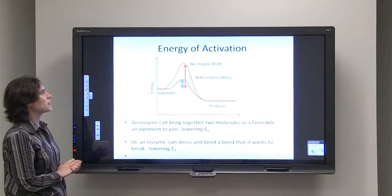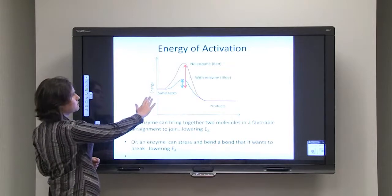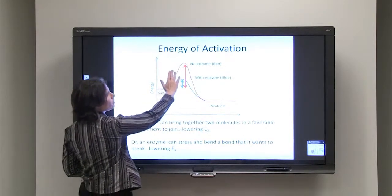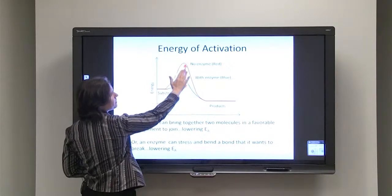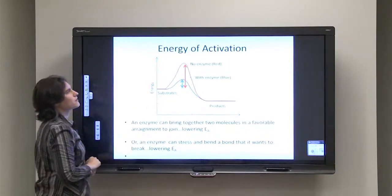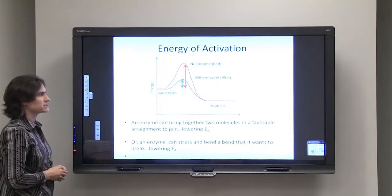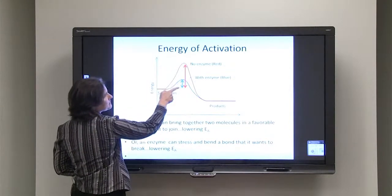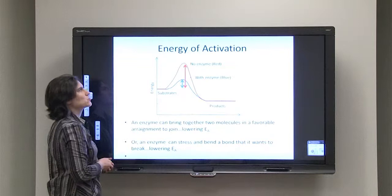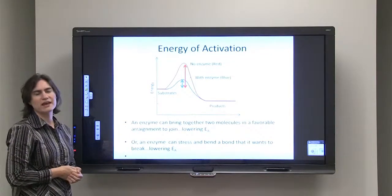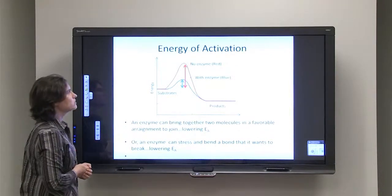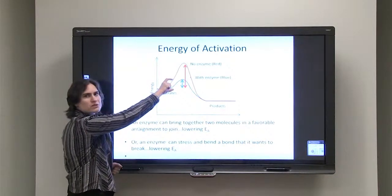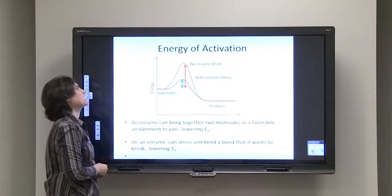Here's an example of what I'm talking about. We've got some substrates that have a certain amount of energy, and then there's an energy barrier that they have to overcome before a reaction can take place. Without an enzyme, we have a very high energy hurdle. But when you use an enzyme, that energy of activation can be reduced, so the reaction takes place much more easily.